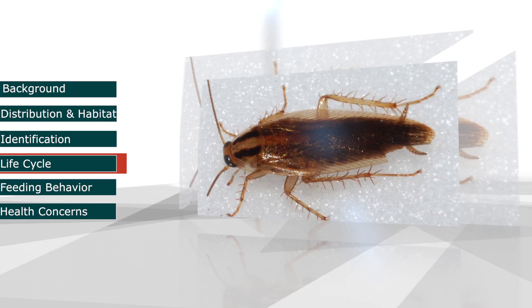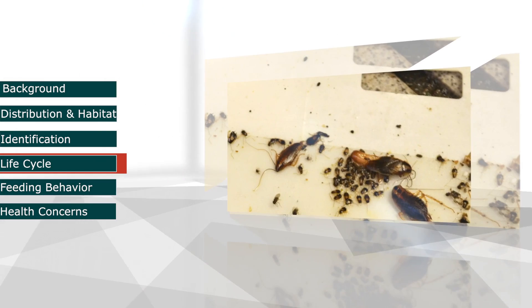Eggs have an average incubation period of 28 days, although that does vary greatly. Once the eggs have hatched, the juvenile German cockroach goes through six or seven instars before they become an adult. Once they become an adult, they can typically live about 10 months.